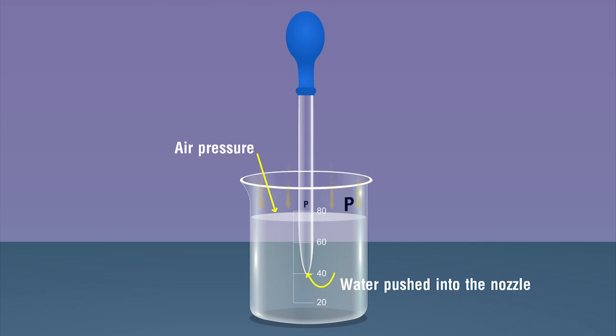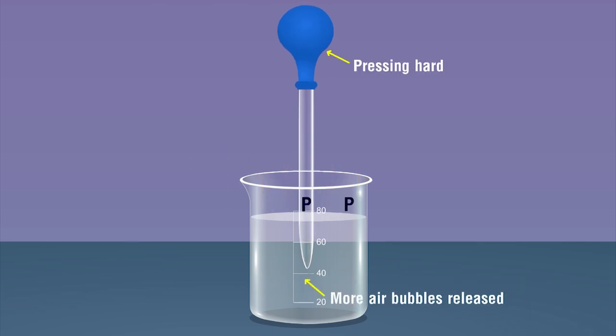This is because of the air pressure on the surface of water in the beaker. The harder we press, the larger the amount of air that is pushed out and the greater the vacuum that is created. As a result, more water is pushed in.